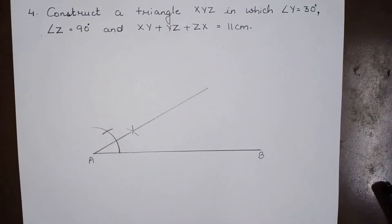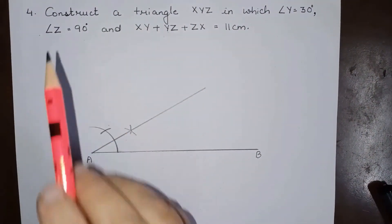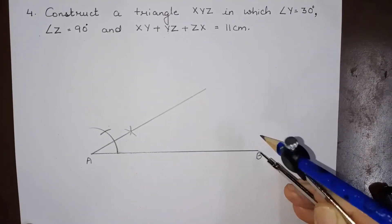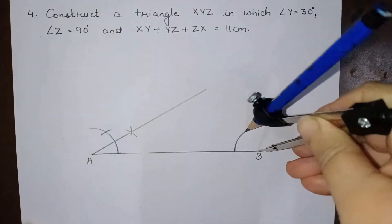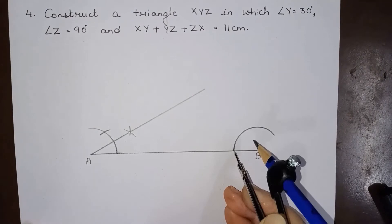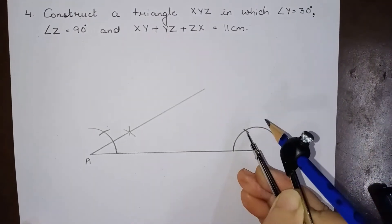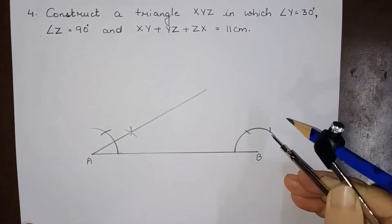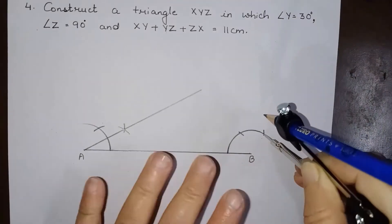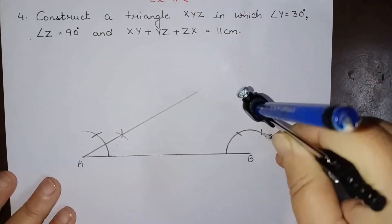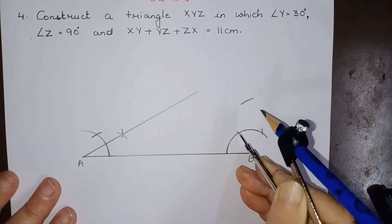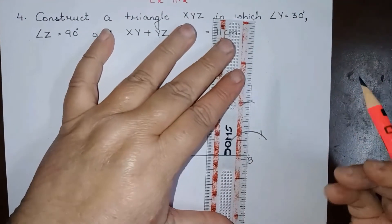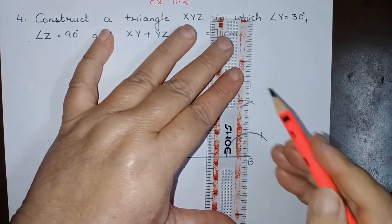Now the other angle given is angle Z equals 90 degrees. So at point B we will construct an angle of 90 degrees. We draw a semicircular arc from this point — this gives us 60 degrees, then 120 degrees — and from these two points we make two arcs of equal radii to get an angle of 90 degrees. So this is an angle of 90 degrees at B.